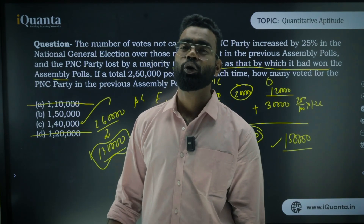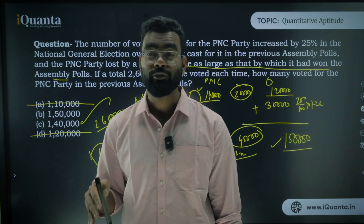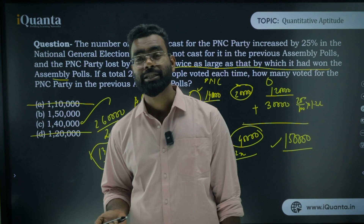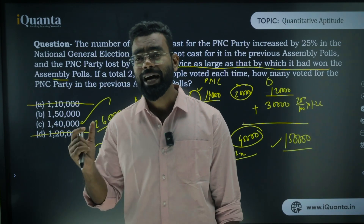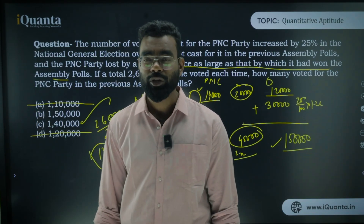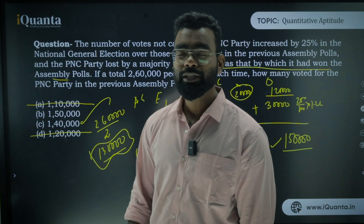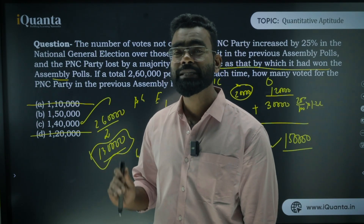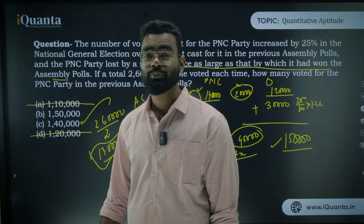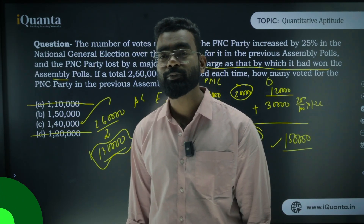This CAT question can be solved by equations too, but that's not necessary. If it were a pure equation-based question, all options would have been above 1,30,000 — but they weren't. The examiners are testing your intelligence, presence of mind, and ability to use the right approach. The approach to solving these questions is very, very crucial.